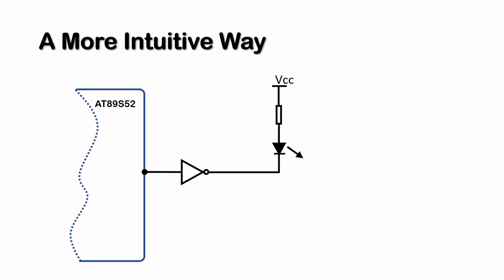Now if you want to still stick to current sinking but prefer a more intuitive way, you could add a hex inverter between the port pin and the LED. So if I put in a logic one, a logic zero appears at the output of the inverter and current will flow.